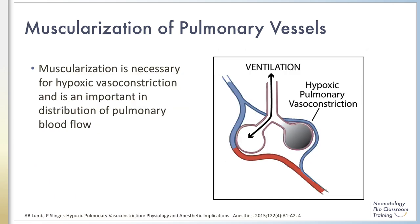So why does this matter? Because muscularization is necessary for hypoxic vasoconstriction to occur, which controls distribution of pulmonary blood flow. When oxygen tension in the alveolus is decreased, hypoxic vasoconstriction allows blood to be diverted away from these regions, delivering blood to better oxygenated alveoli. The ability to shunt blood away from poorly oxygenated areas of the lung improves with advancing gestational age and then progressively in postnatal life as muscularization develops distally.